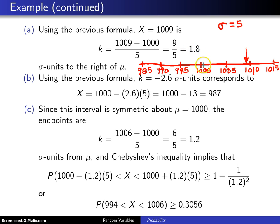So you can measure this in absolute numbers associated with the random variable. And this would be 9 screws to the right of 1000. Or you can measure it in sigma units. And in sigma units, this is 1.8 sigma units to the right of mu.